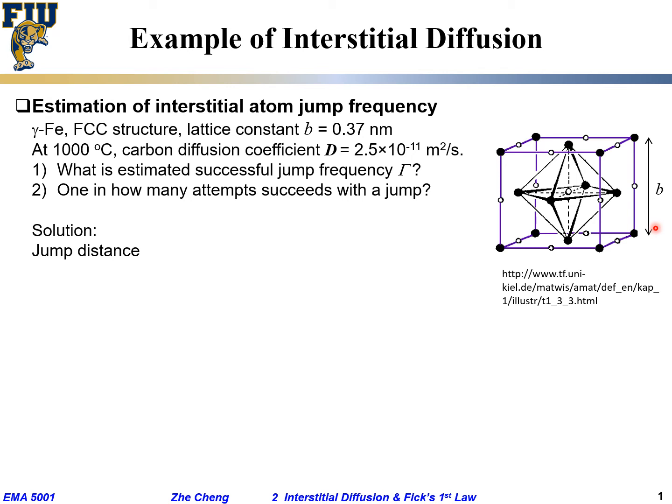At so-called interstitial sites, which are either at the body center or at the edge center. That's our weakened sites. So what's our jumping distance? It's always jumping to the next nearest neighbor.